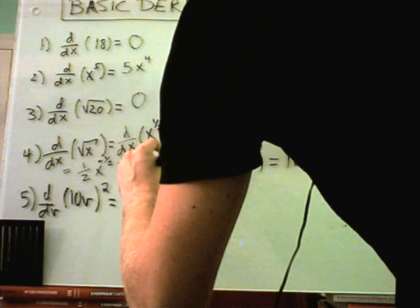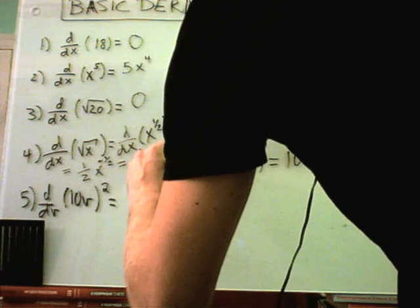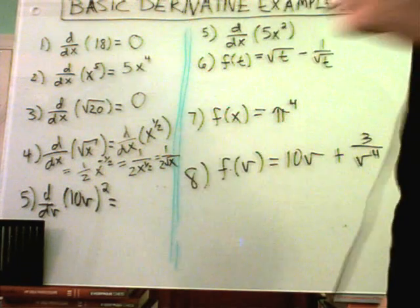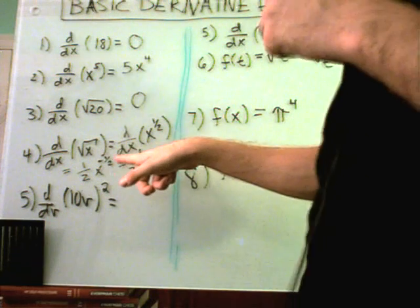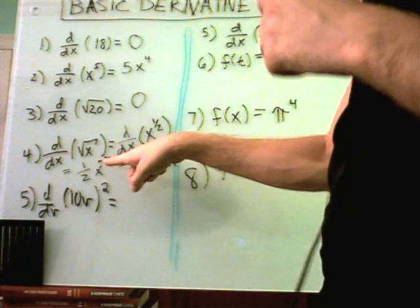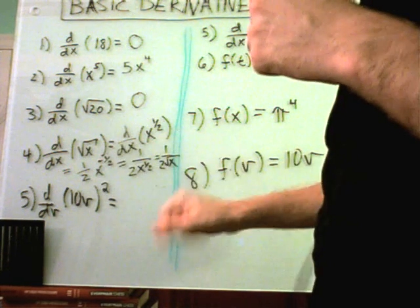We can rewrite this as one over two x to the positive one-half, which would be the same thing as one over two square root of x. If you stopped right here this is certainly correct, but in general in mathematics you try to leave all exponents being positive.